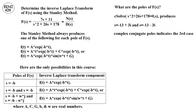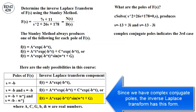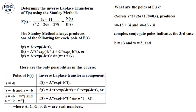Complex conjugate poles indicate the third case. Since we have complex conjugate poles, the inverse Laplace transform has this form, where B is 13 and omega is 3.